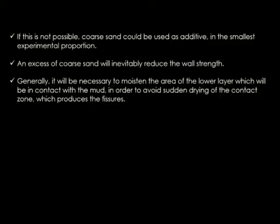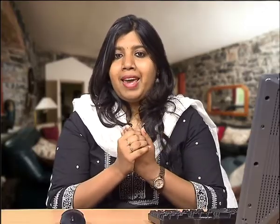If adding straw is not possible, coarse sand could be used as an additive instead, but only in the smallest experimental proportion. An excess of coarse sand will inevitably reduce wall strength — what is used as an additive to increase the strength of the mould will actually become the reason to reduce the strength of the mould. Generally, it will be necessary to moisten the area of the lower layer which will be in contact with the mud, in order to avoid sudden drying of the contact zone which produces fissures.